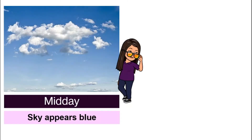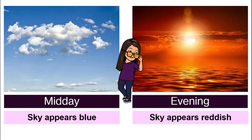Have you ever wondered why during midday our sky appears blue, beautiful, calming blue? And in the evening, it actually appears reddish. Why does the sky change color? During midday, it is calming, it is blue, it is beautiful. During the evening, it is romantic, it is red and orange and yellow in color. Why does that happen?